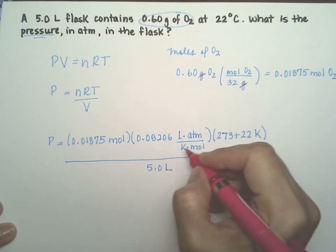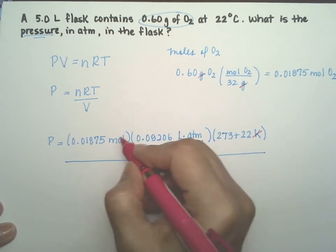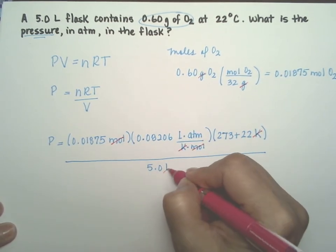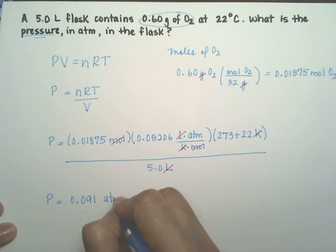All right, so let's cancel our units. Kelvins, moles, and liters. And we are left with atmosphere, which is a unit for pressure. So we did good, 0.091 atmospheres.